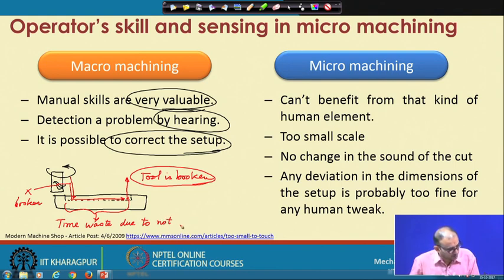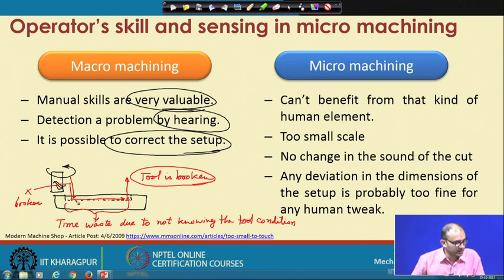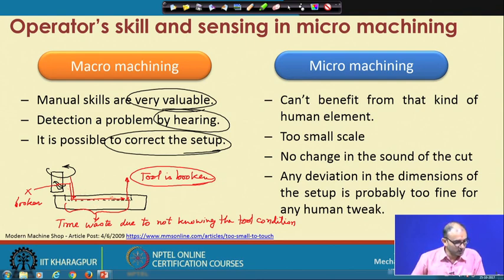Time is wasted due to not knowing the tool condition, and this may happen many times. Therefore we need cameras, force sensors, and accelerometers to tell us when the tool is in contact with the surface. When there is contact, forces are generated even at a small scale, and you will get a signature from the force measurement instrument. If you get no signal, it means the tool is broken or there is no contact between tool and workpiece.